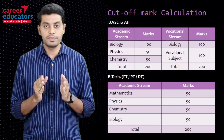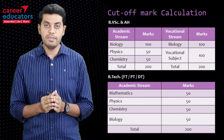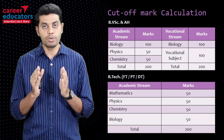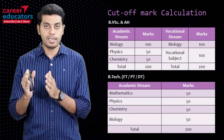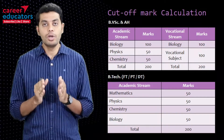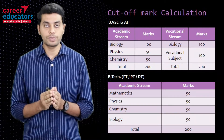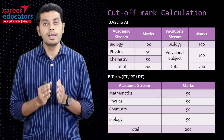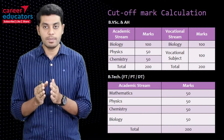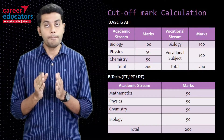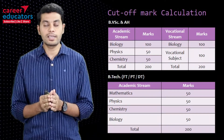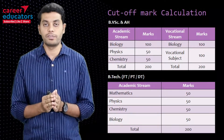Next, we will see how to calculate the cut-off mark. For BVSE, the subjects are biology, physics, and chemistry — biology is 100 marks, physics is 50 marks, chemistry is 50 marks, totalling 200 marks. That is the cut-off. If you are in the vocational stream, biology is 100 marks and the vocational subject is 100 marks, scoring 200 marks total as the cut-off mark.